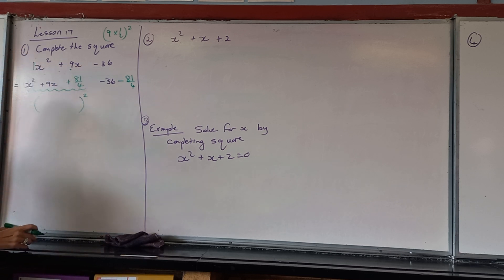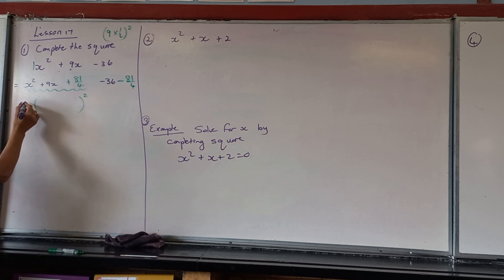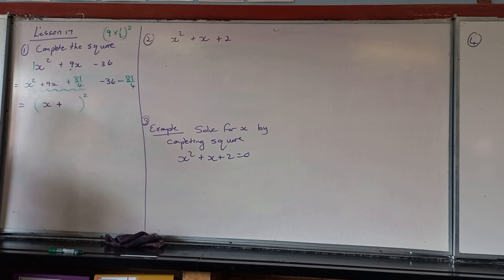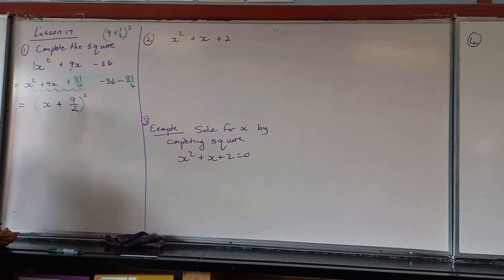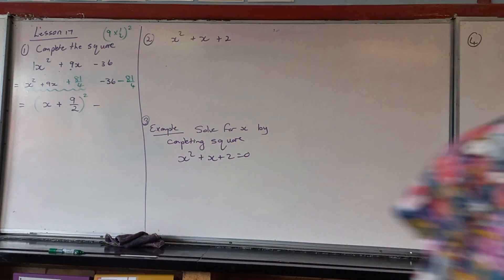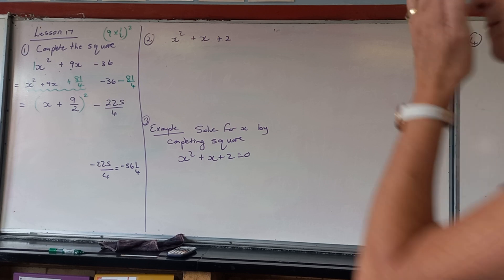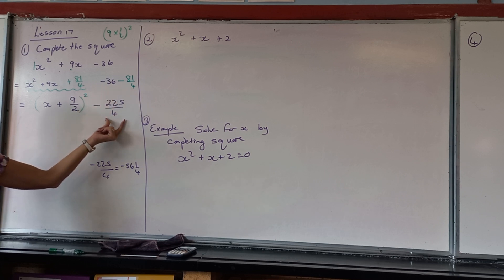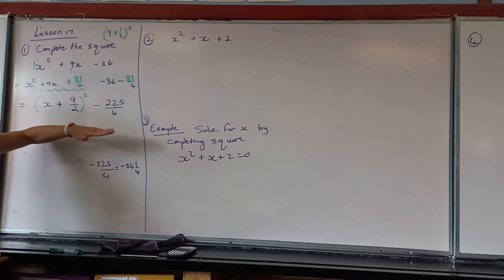This trinomial factorises in the following way: the X squared is square rooted to give just X, the sign for the second term stays a plus, and then for the third term you take the square root of 81 over 4, which is 9 over 2. Then you have completed the square. You still have to work out the remaining terms and give a fraction answer — put into the calculator negative 36, minus 81 divided by 4, and you get your answer. You are done completing the square.